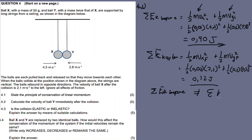The initial kinetic energy before (0.90 J) is not equal to the sum of kinetic energy after (0.12 J). Therefore the collision is inelastic. If they were equal we would say it is elastic. Because they are not equal, we conclude the collision is inelastic. This calculation-based explanation is what you need for 4.3.